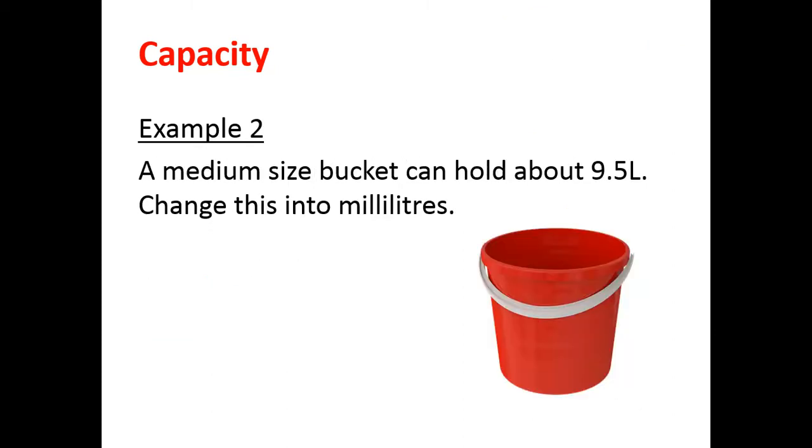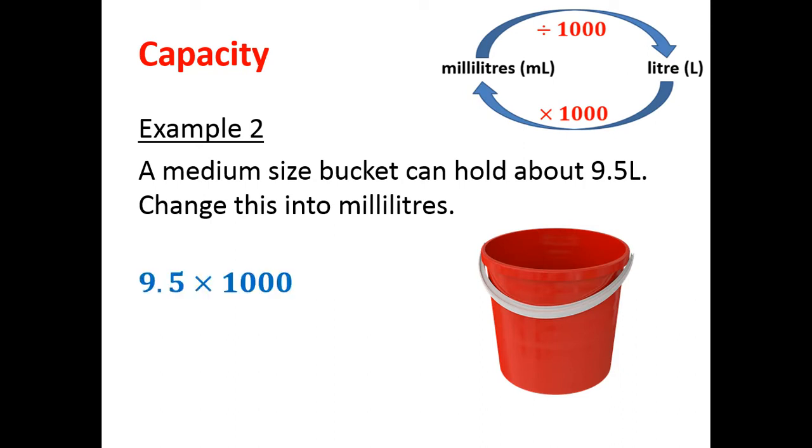Example 2. A medium-sized bucket can hold about 9.5 litres. Change this into milliliters. Quickly looking at our diagram, we're changing litres back into milliliters. We need to multiply by 1,000. So 9.5 times 1,000 gives 9,500 milliliters. We often say 9,500 mils. It's a shortcut.